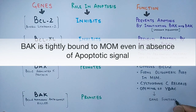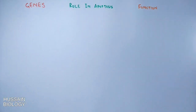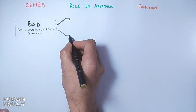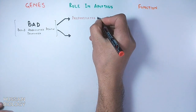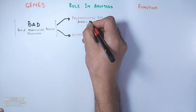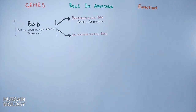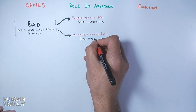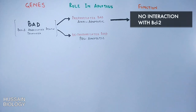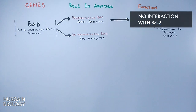Then we have the BAD gene — BCL-2 associated death promoter. It exists in two forms: phosphorylated BAD and dephosphorylated BAD. Phosphorylated BAD is an anti-apoptotic factor. The phosphorylated BAD protein does not show any interaction with BCL-2 protein, so BCL-2 function is not disrupted, and since BCL-2 is an anti-apoptotic factor, it continues to do its work.